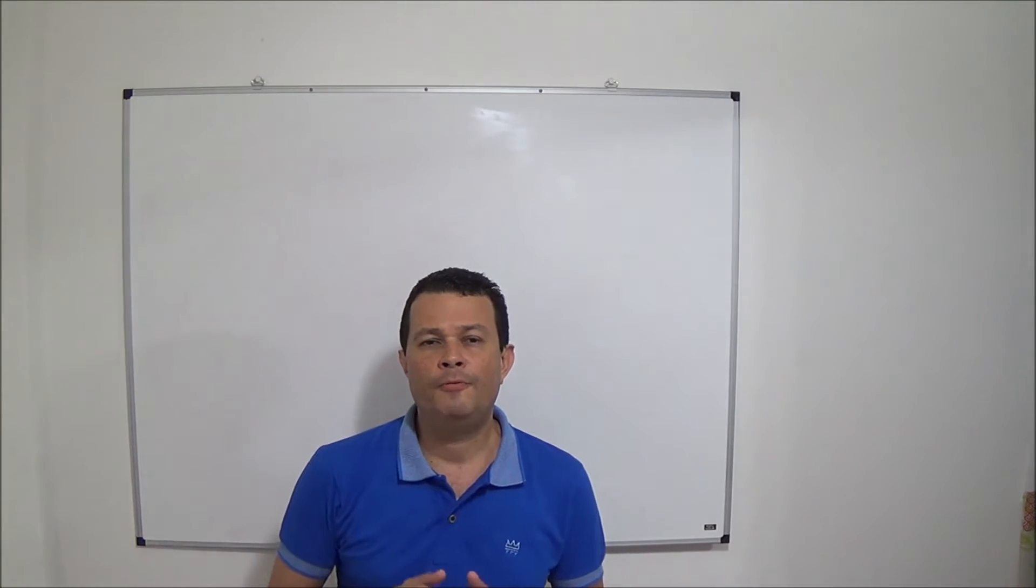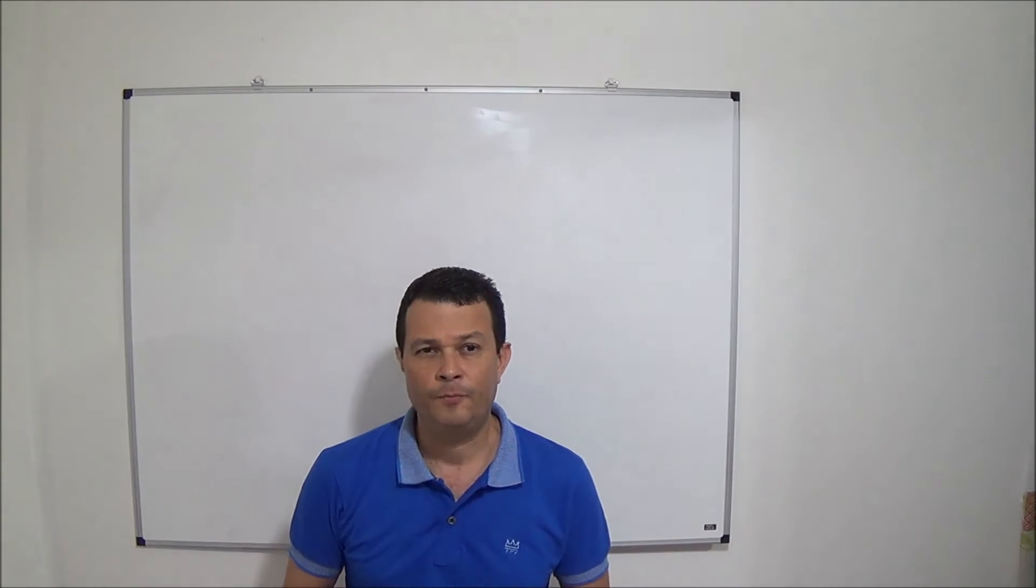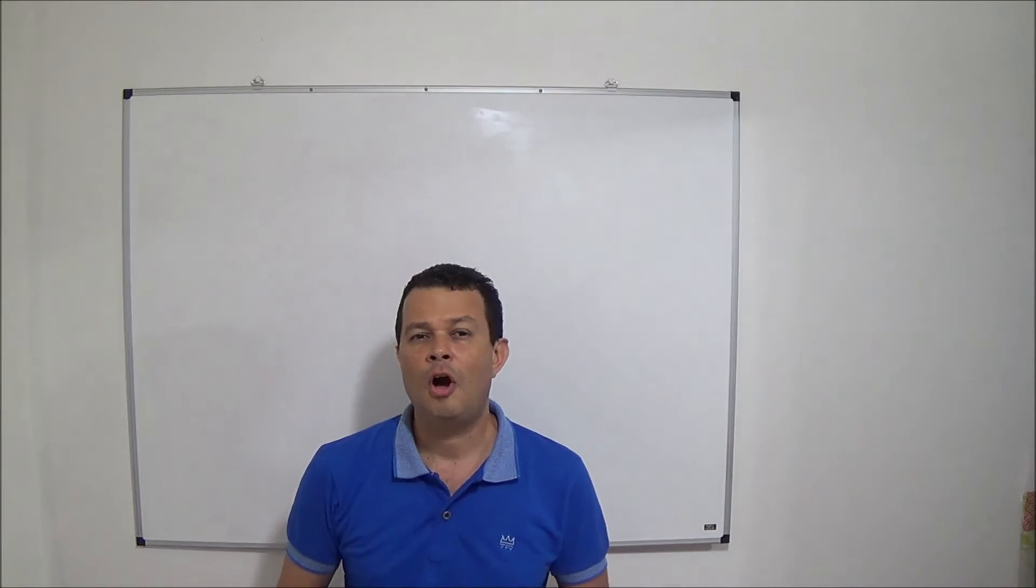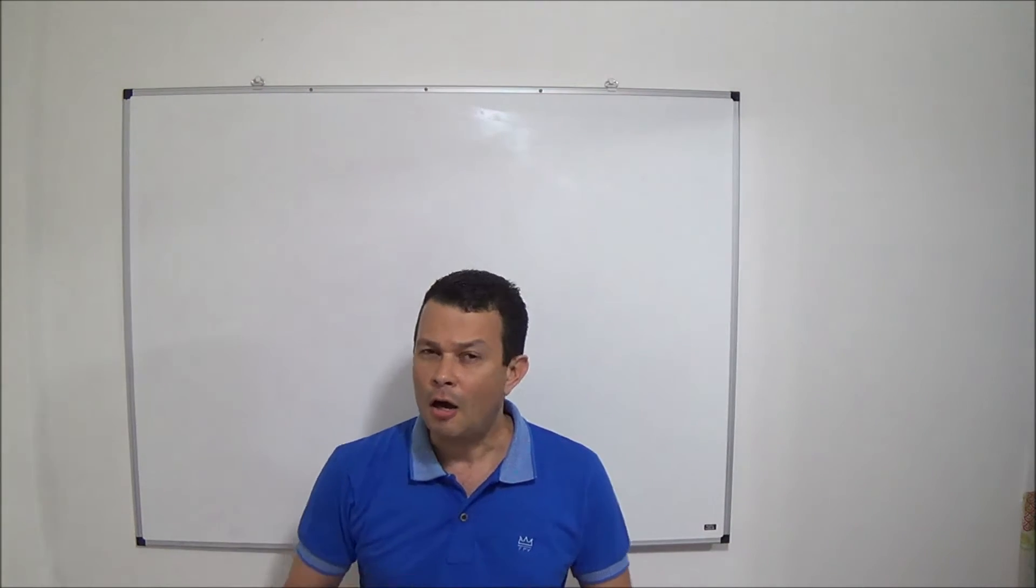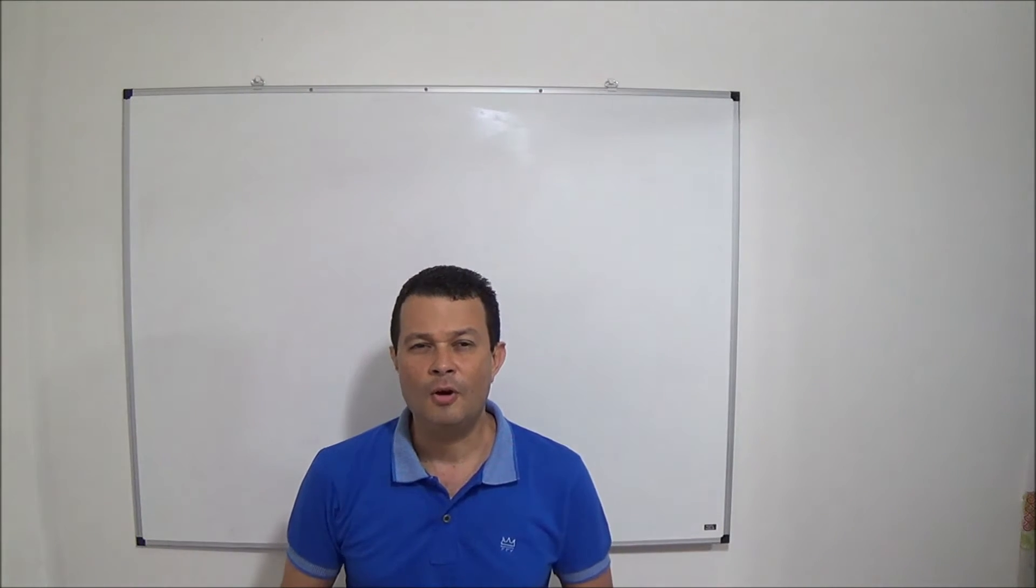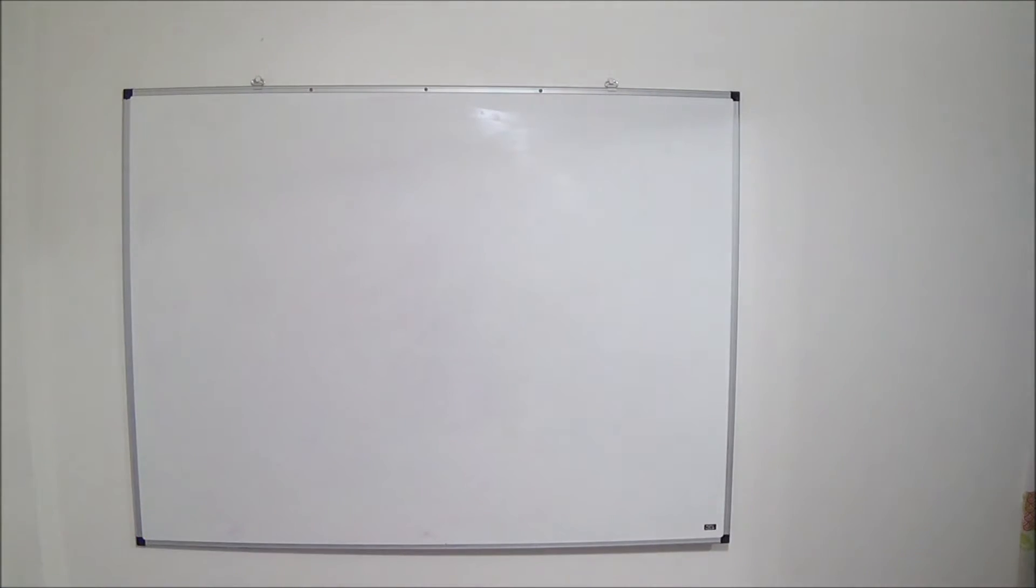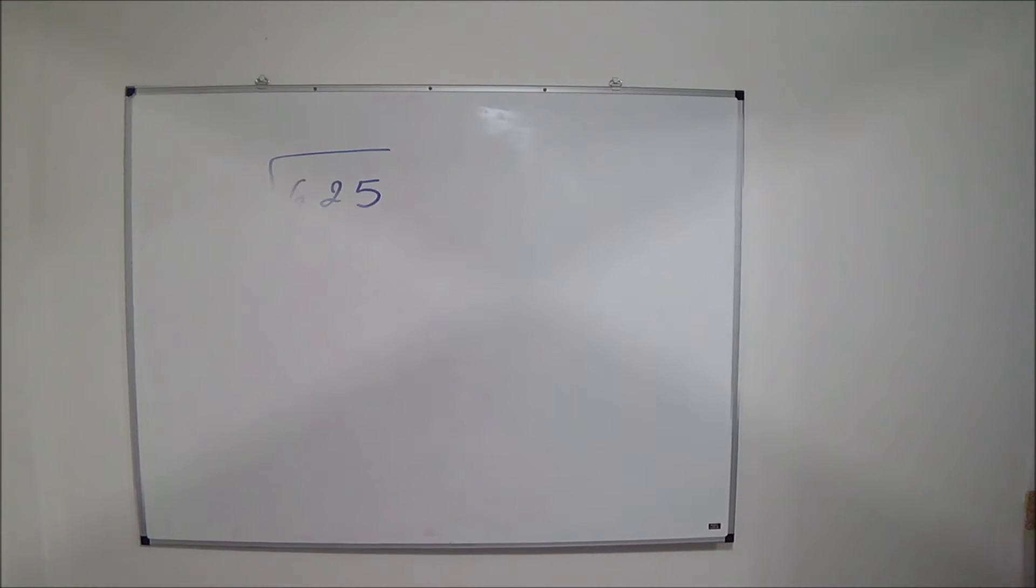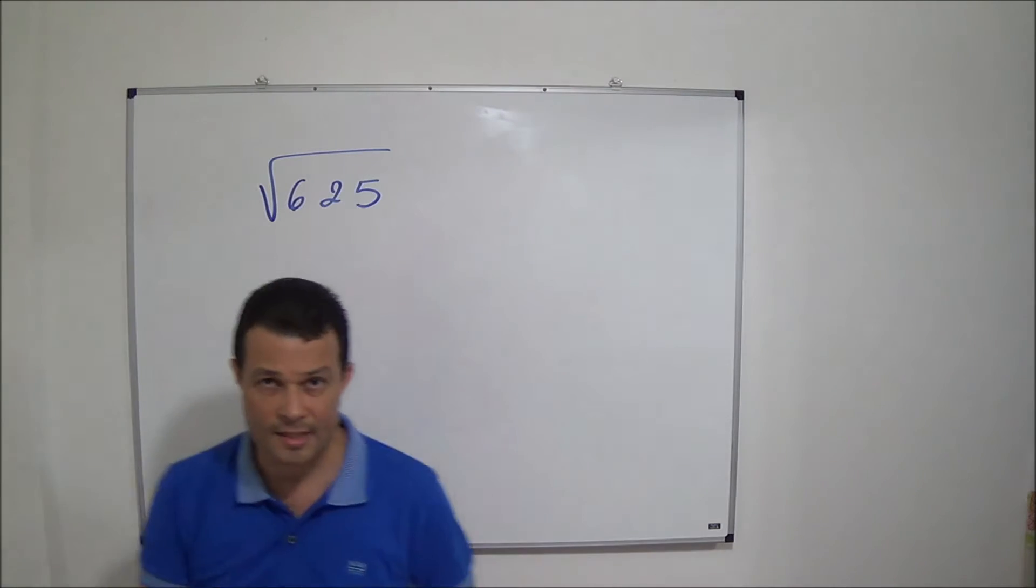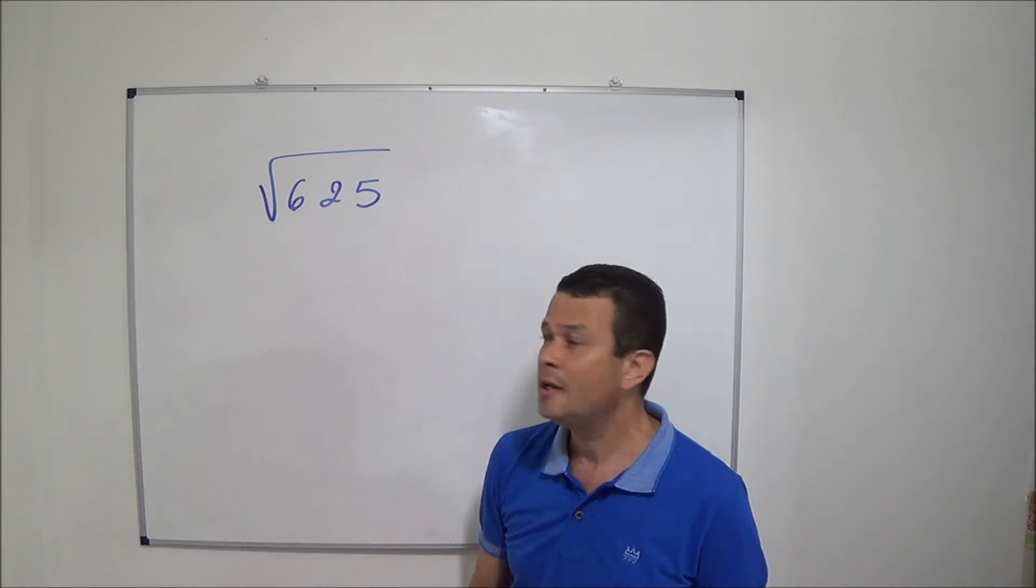But before starting I'd like to clarify that this method was created to calculate the square root of numbers that are perfect squares. Alright? Here we go. Let's see the first example.